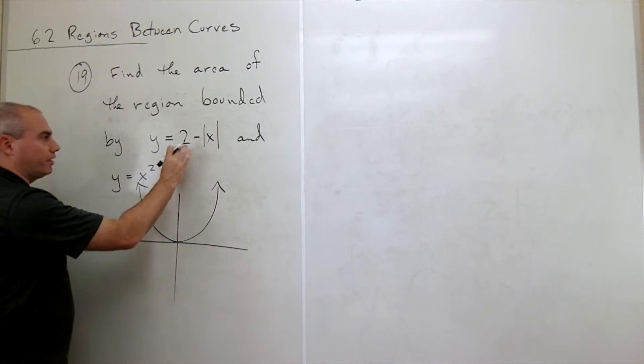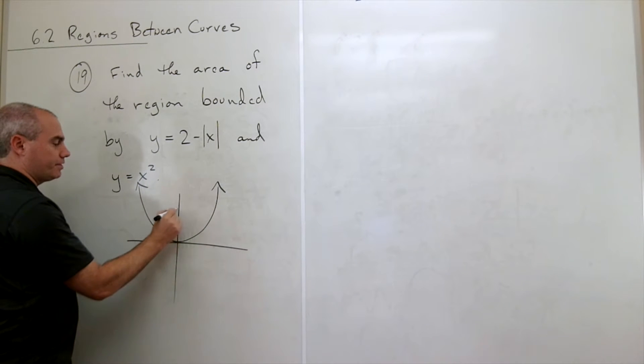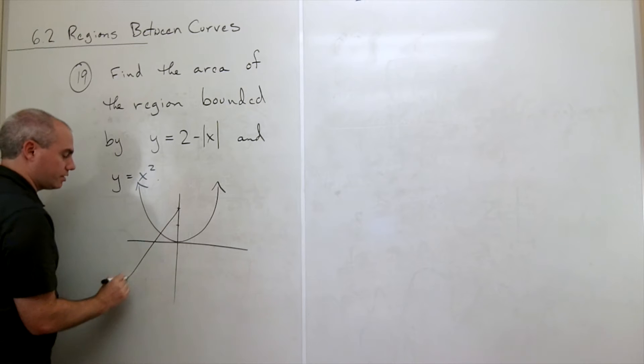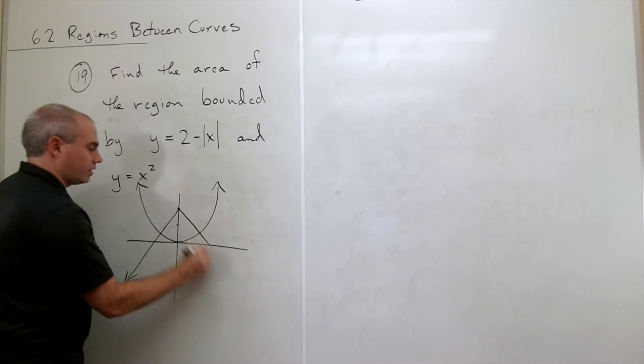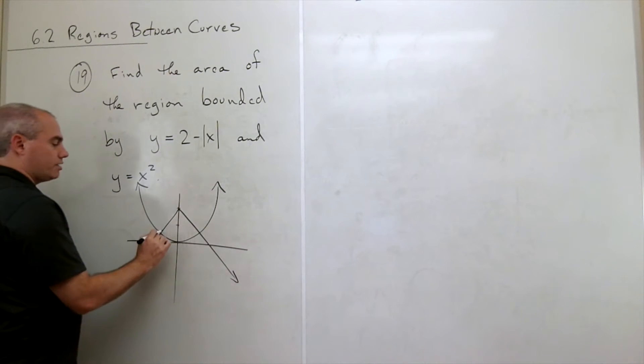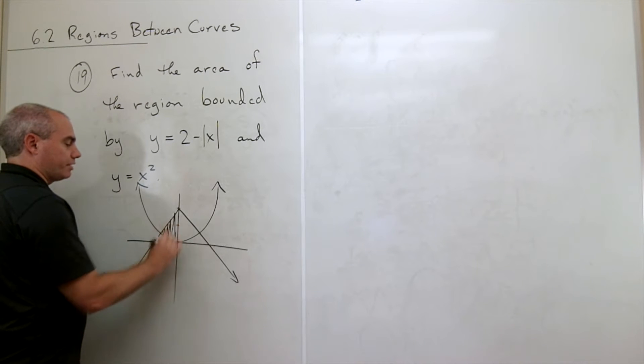And then y equals 2 minus absolute value of x. Minus absolute value of x looks like an upside down v but plus 2 just moves it up, so we've just got this upside down v starting at 2 and we get this little region trapped in here.